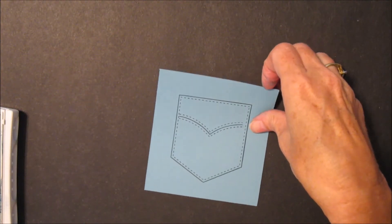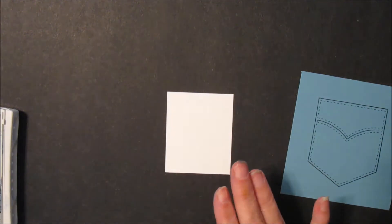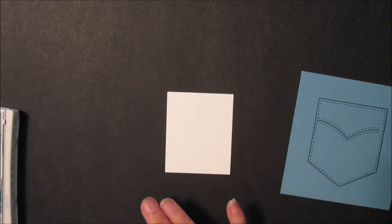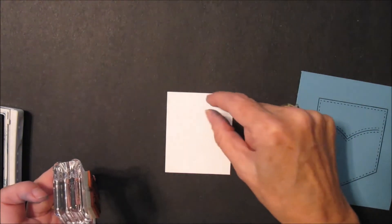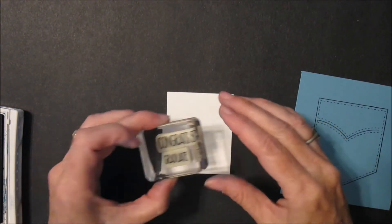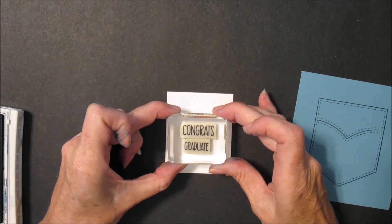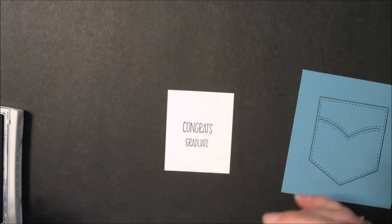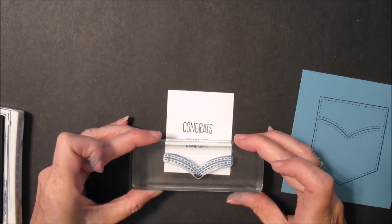And then we'll get the Whisper White piece and I'll stamp the Congrats Grad. Now remember that there will be your sunglasses up at the top, so make sure this comes down about halfway or so like that. And then again we'll take that V-shape and put that at the bottom.